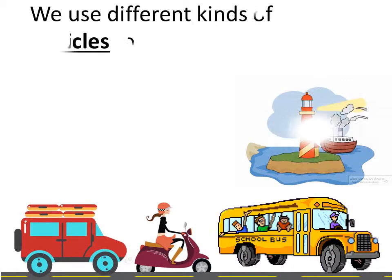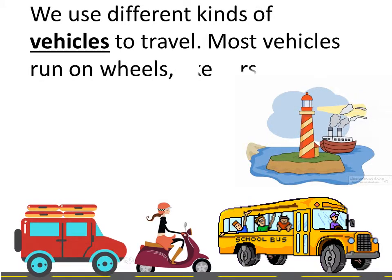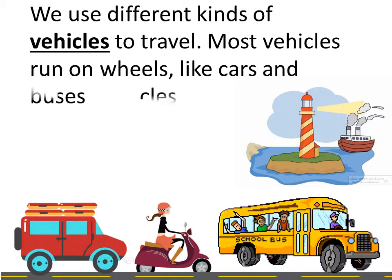We use different kinds of vehicles to travel. Most vehicles run on wheels, like cars and buses. Vehicles that travel on water do not run on wheels.